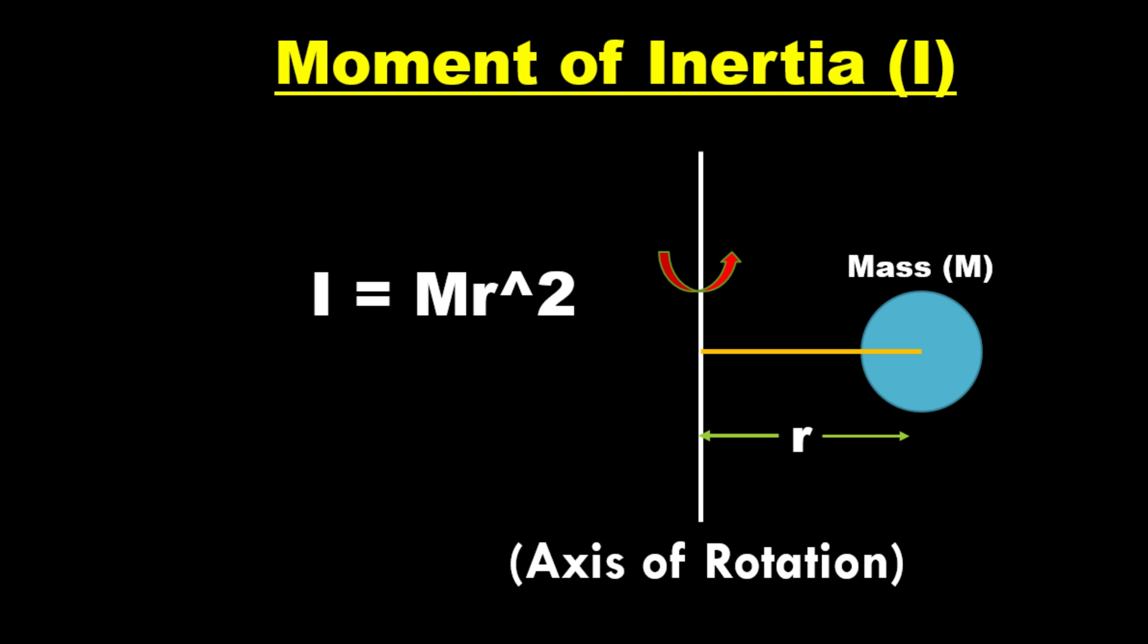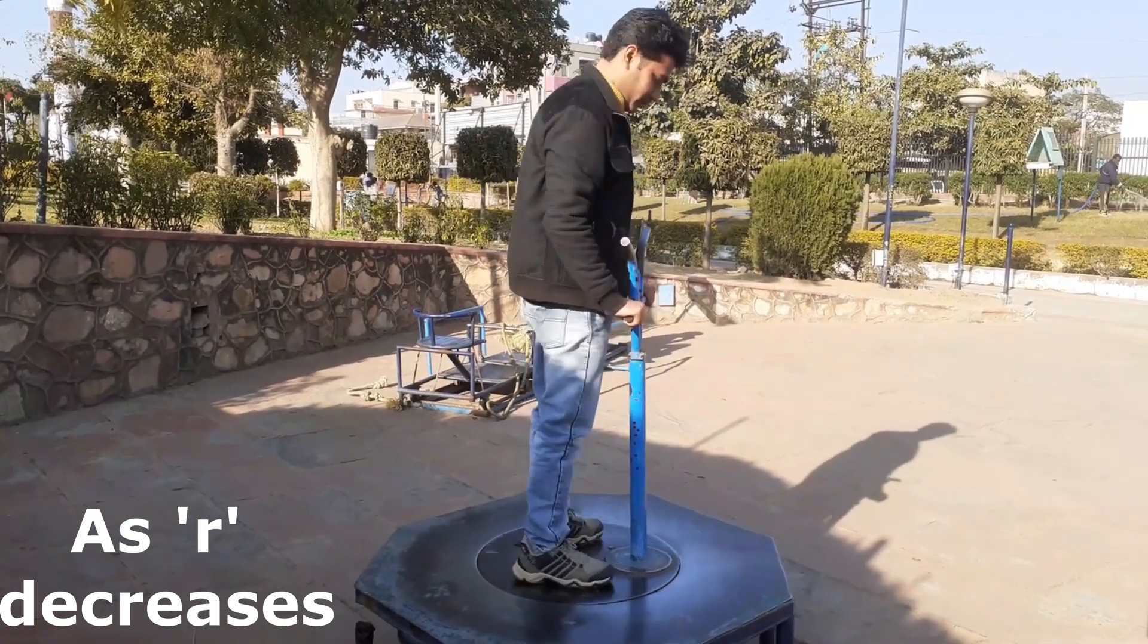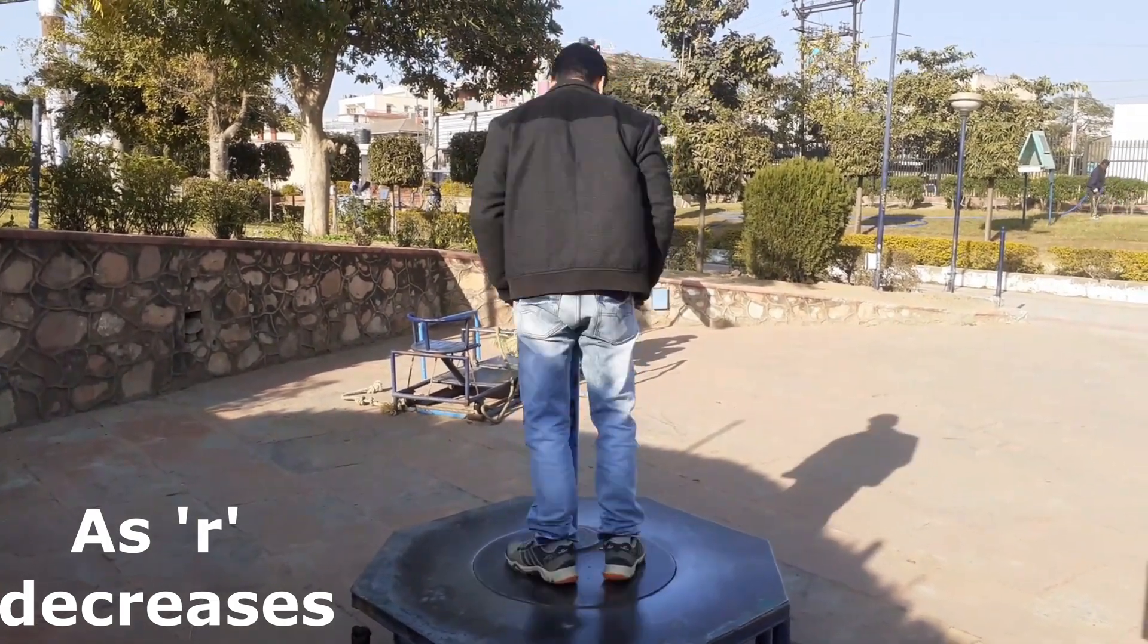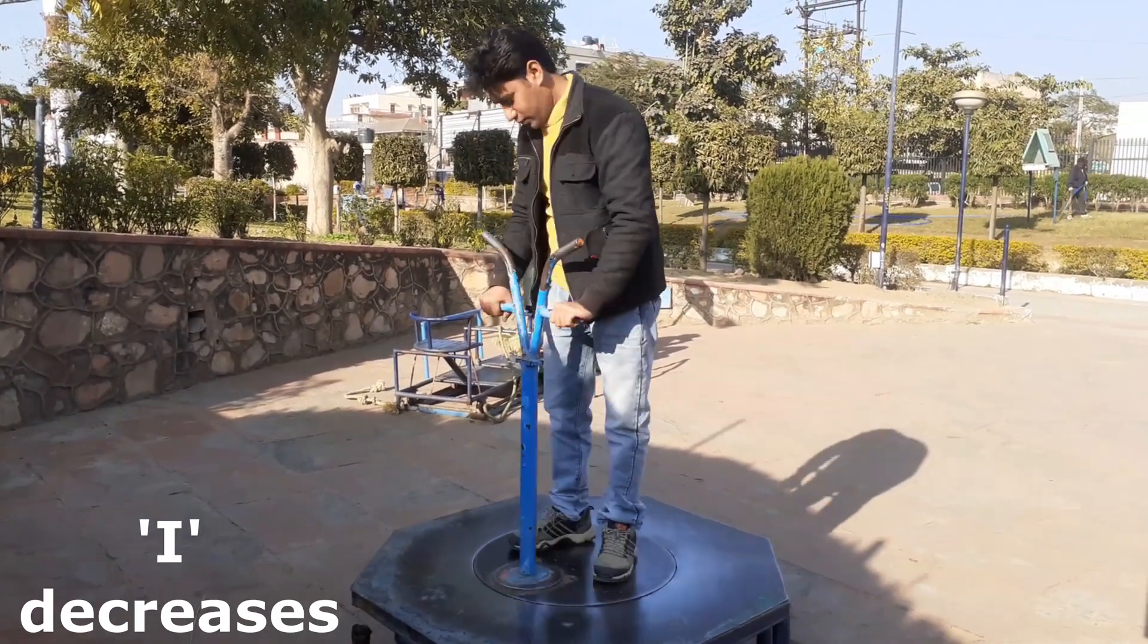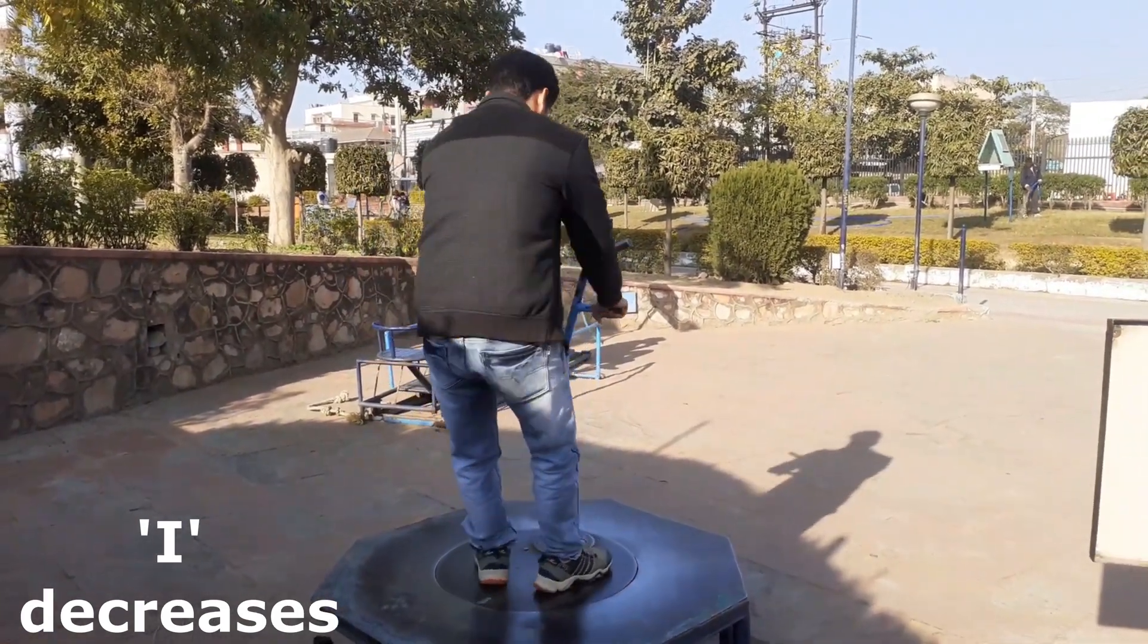I can be denoted as MR squared. When the distance of the body, R, decreases from the axis of rotation, its moment of inertia, I, decreases.